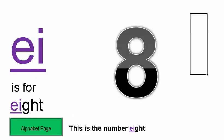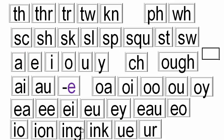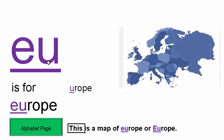EI — you can see this is EIGHT. So the sound EI is A. This is the number EIGHT. EU is for EUROPE — phonetically it would be YUR-up. This is a map of Europe.